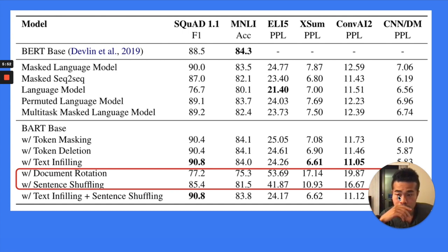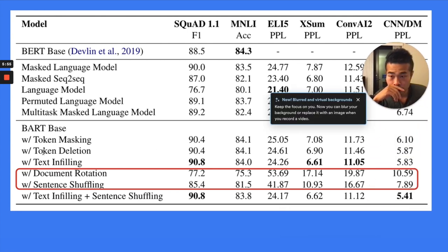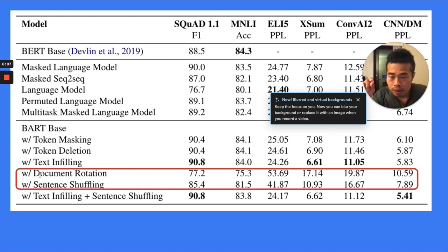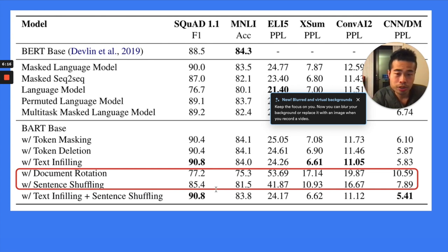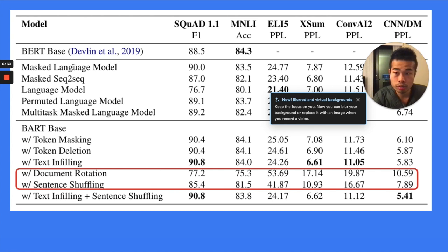Here are some ablation studies. They ablate doing only token masking, only token deletion, text filling, document rotation, and sentence shuffling. As you can see, if you only do document rotation, performance is quite bad. If you only do sentence shuffling, performance is also quite bad. But if you only do token masking, its performance is very similar to masked language modeling. These five methods are basically mimicking previously state-of-the-art approaches: mask token, mask language model, and mask sequence-to-sequence.